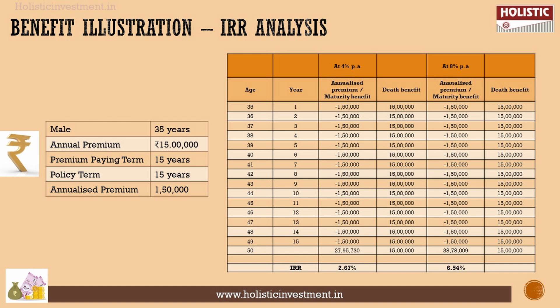This return is not justifiable given the risk involved. A 2.67% return in the worst-case scenario is not acceptable. In the best-case scenario at 8%, the IRR will be 6.54%. While 6.54% is a decent return, it is at a debt instrument level — similar to returns from a fixed deposit. Investing in an FD gives you a guaranteed return, whereas this ULIP carries market risk for the same level of return.